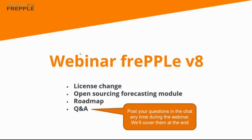There are three things I wanted to cover. First was the license changes, one particular topic that has changed. Second topic is the forecasting module, which is now added to the open source community edition. And while we're in this webinar, I also wanted to give a roadmap — a picture of what's coming up and what the FrePPL team is currently busy working on and what we have in our minds.